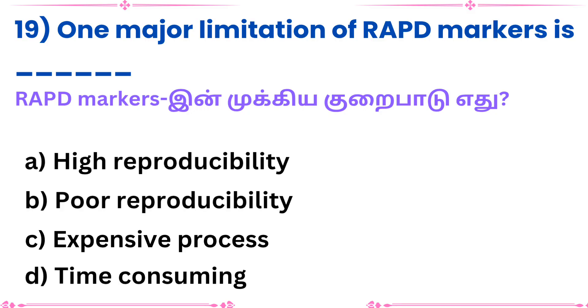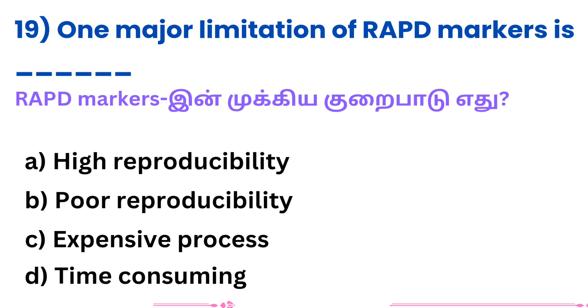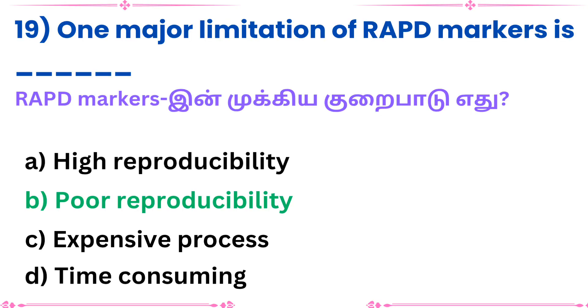Question 19: One major limitation of RAPD markers is — what? Answer: Poor reproducibility.